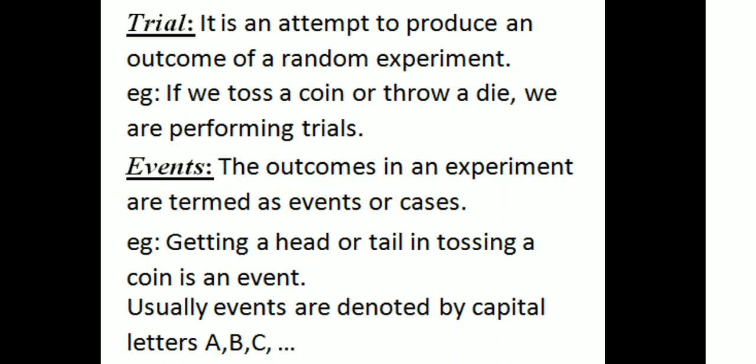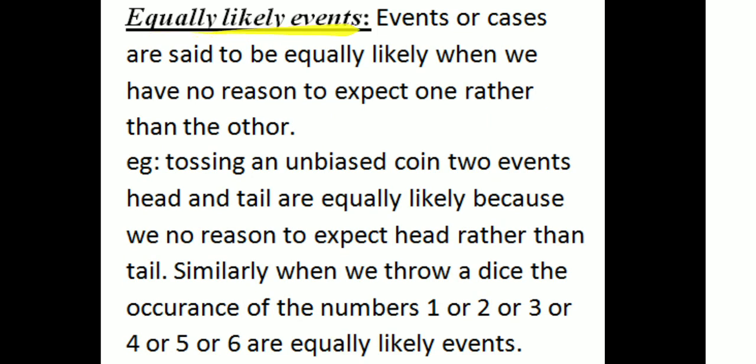Next: events. The outcomes in an experiment are termed as events or cases. For example, when a coin is tossed, getting a head is an event; when a die is thrown, getting 1, 2, 3, 4, 5, or 6 are events. Events or cases are said to be equally likely when we have no reason to expect one rather than another. For example, when tossing an unbiased coin, head and tail are equally likely. When throwing a die, the occurrence of 1, 2, 3, 4, 5, or 6 are equally likely events.